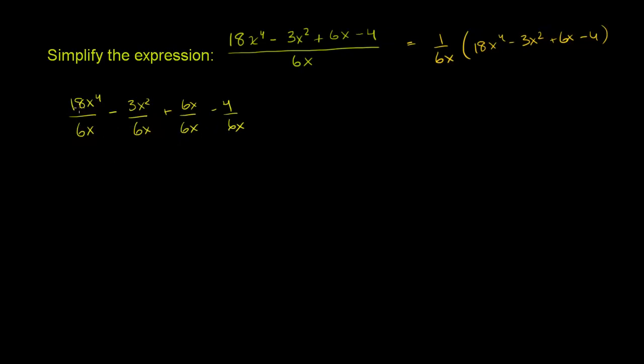Now once you have it here, now we just have a bunch of monomials that we're just dividing by 6x. And here we can just use exponent properties. This first one over here, we can take the coefficients and divide them. 18 divided by 6 is 3. And then you have x to the fourth divided by x to the... Well, they don't tell us, but if it's just an x, that's the same thing as x to the first power. So it's x to the fourth divided by x to the first. That's going to be x to the 4 minus 1 power, or x to the third power.